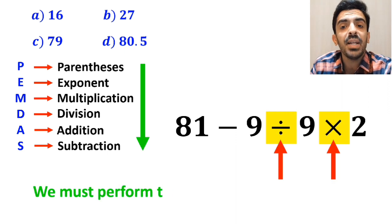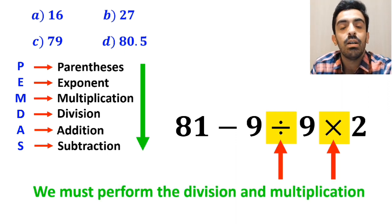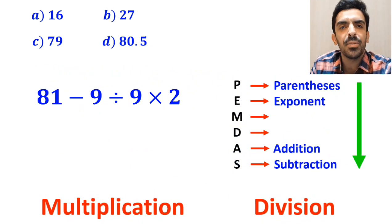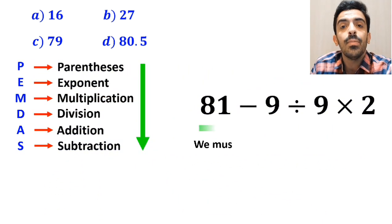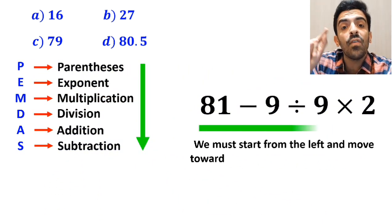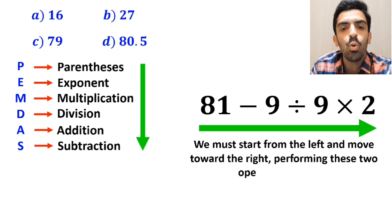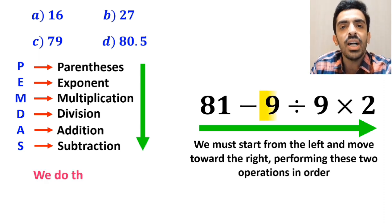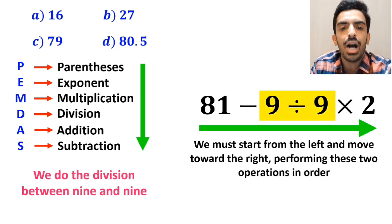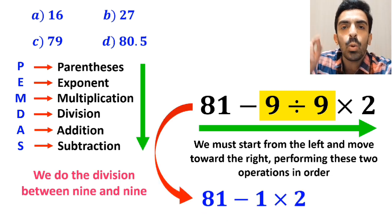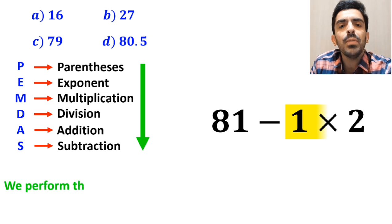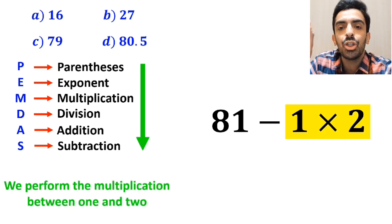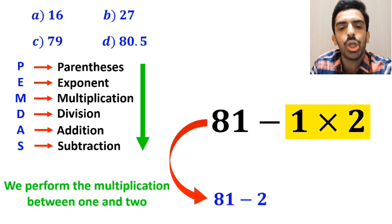Then we must perform the division and multiplication. However, it's really important to understand that in the PEMDAS rule, multiplication and division have the same level of priority. In this situation, we must start from the left and move toward the right, performing these two operations in order. So first we do the division between 9 and 9, and this expression simplifies to 81 minus 1 times 2. In the final step, we perform the multiplication between 1 and 2, which simplifies this expression to 81 minus 2.